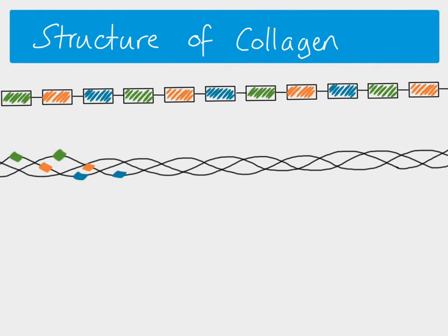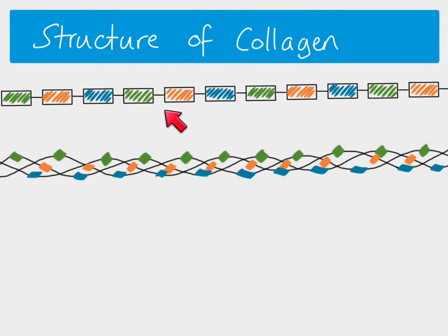We can look at the whole triple helix and show where all of the glycines are, then the prolines and all of the alanines. This triple helix is very tightly wound and very compact, because of the glycine molecules which are regularly spaced out. Glycine is a very small amino acid — the R group of glycine is just a single hydrogen atom. So because we've got glycine repeated throughout the primary structure, we end up with a very compact and tightly wound triple helix.